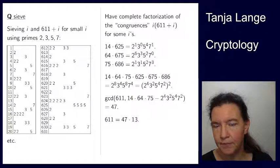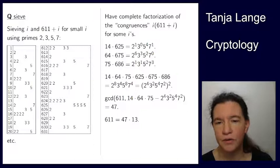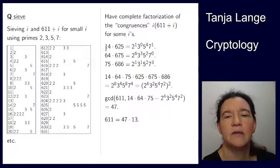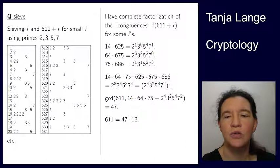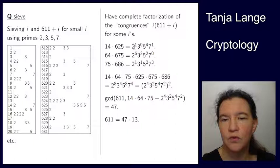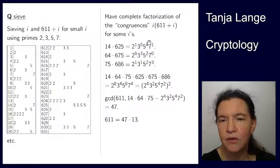Now if I take the product of all of those, if I'm taking the product on the left, then I'm having 14 times 625 times 64 times 675 times 75 times 686. And that is equal to the product of those. So if I collect them by prime powers, I have a 2 to the 1, 2 to the 6, 2 to the 1. So 2 to the 8, 3 to the 4, 5 to the 8, and a 7 to the 4. Okay, that's what I'm having here.